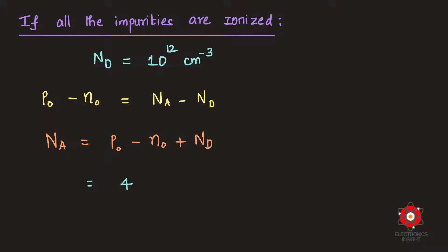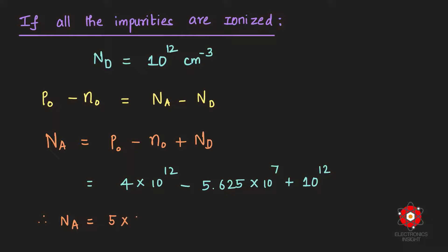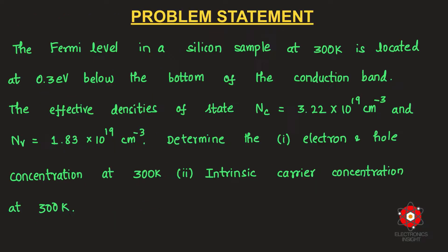Substituting the values — p₀ = 4×10¹² cm⁻³, n₀ = 5.625×10⁷ cm⁻³, and Nd = 10¹² cm⁻³ — we obtain the acceptor density Na = 5×10¹² per cm³.